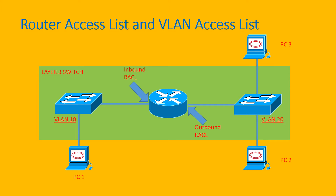The packet from PC1 in VLAN 10 to PC2 in VLAN 20 is being checked by the inbound RACL and also the outbound RACL. As you can see, the first packet is allowed by both inbound RACL and outbound RACL, so it is able to reach PC2.